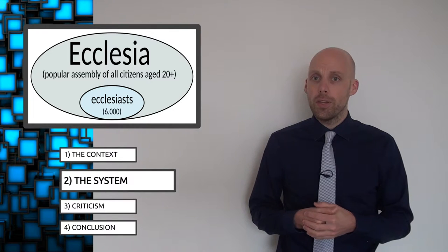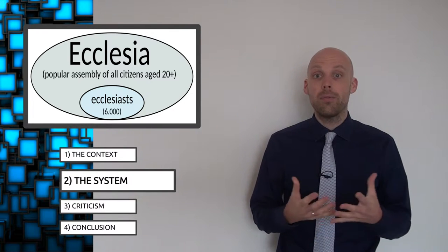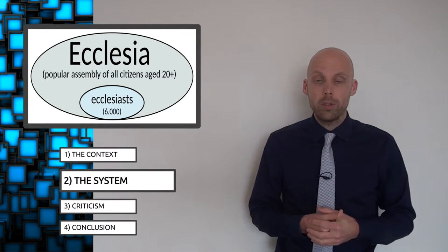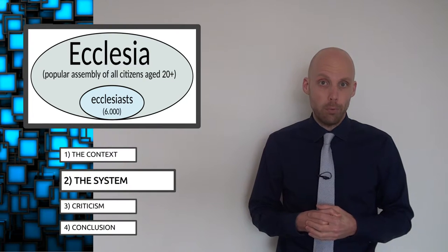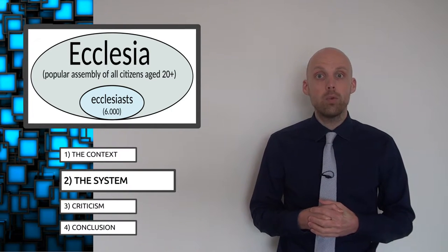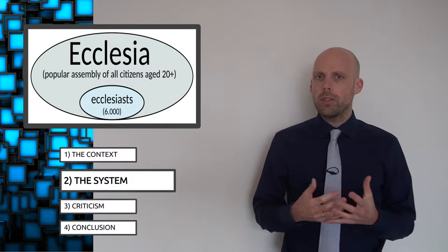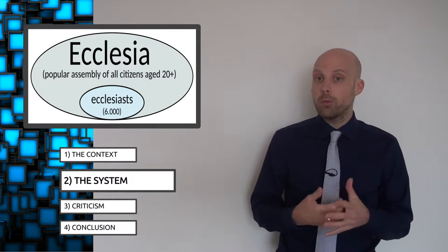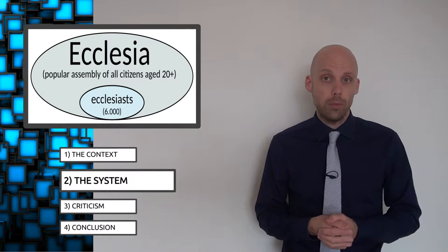The Ecclesia usually met on the Nix, a gently sloping hill some 500 meters from the Acropolis which could accommodate 6,000 people. Meetings took place roughly once every nine days and would start at sunrise. By lunchtime it was usually all over. Votes were relatively rare, the Ecclesia strived for consensus.